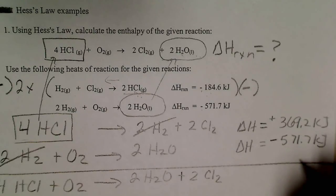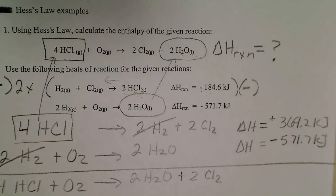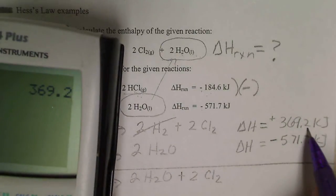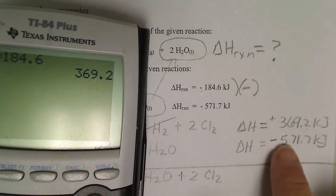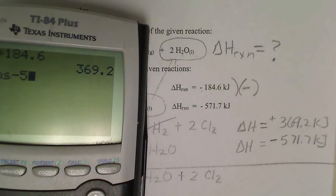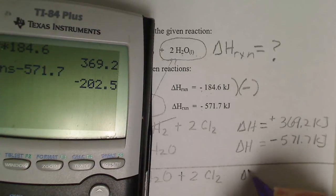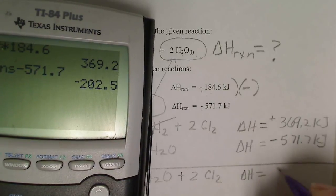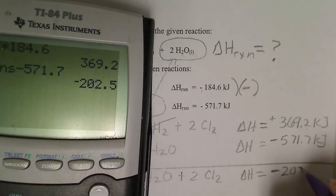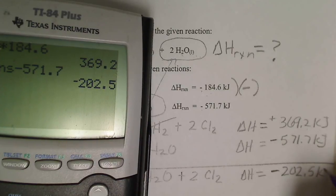So I'm going to do the same thing with the delta H values, add those. So the 369.2 is still in the calculator. I'm going to subtract 571.7. So the delta H value for this particular reaction is negative 202.5 kilojoules.